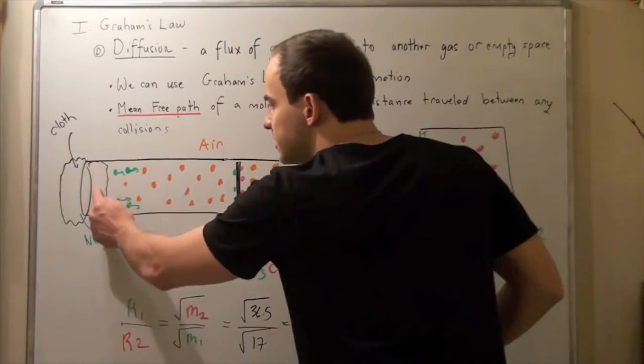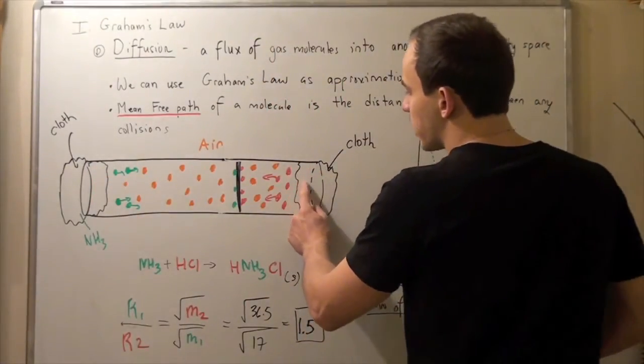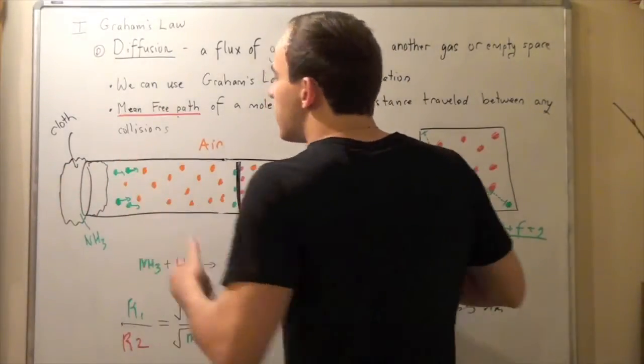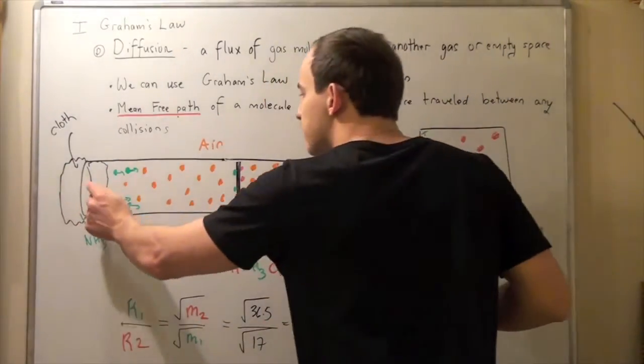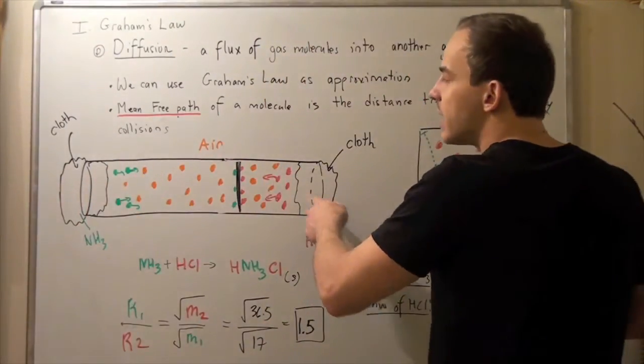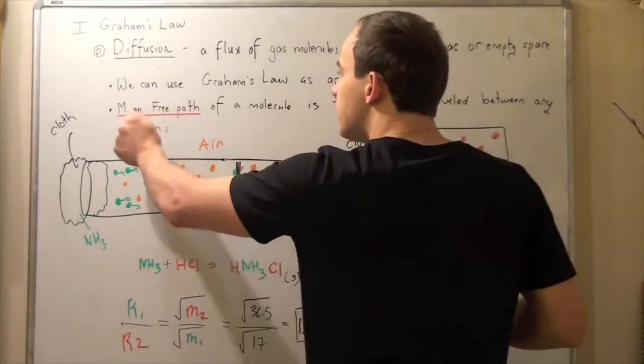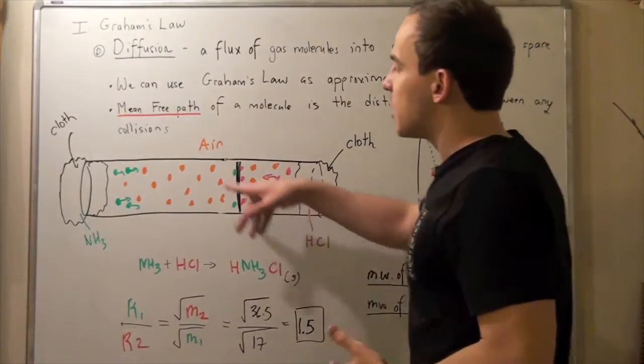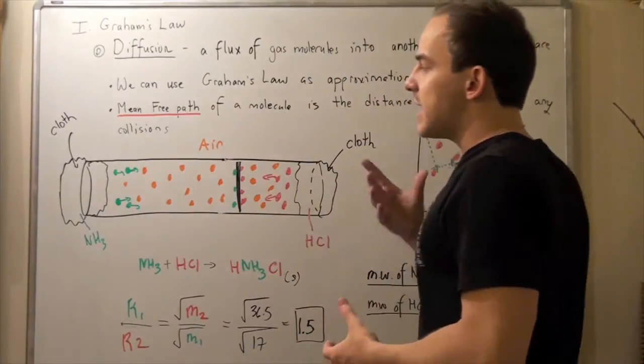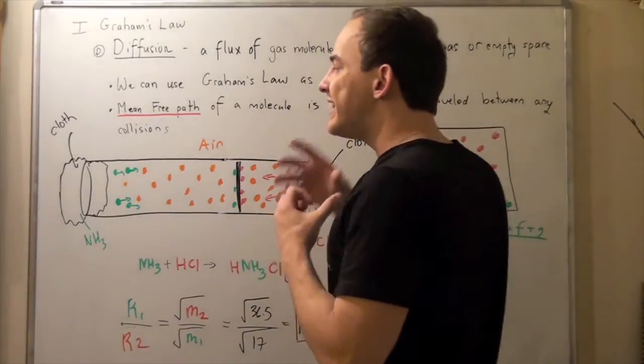Well some of these guys will evaporate and some of these guys will evaporate. And they will begin moving. But they won't move directly from this point to this point. They will move via a crooked path because of something called the mean free path. Because there are air molecules present. And these air molecules will create collisions.